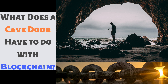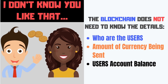The cave door analogy provides a great visual to explain what a zero-knowledge proof is. But why are zero-knowledge proofs important in blockchain technology? To understand this, let's take a look at another example. Imagine that user A wants to send user B some currency. The role of the blockchain is to validate that user A has enough currency to cover the payment to user B. However, the blockchain doesn't need to know any additional information.